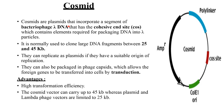Cosmids are plasmids that incorporate a segment of bacteriophage lambda DNA containing the cohesive end site, also called the cos site, which contains elements required for packaging DNA into the lambda particle. They are normally used to clone large DNA fragments between 25 to 45 kb. They can replicate as plasmids if they have a suitable origin of replication, and can also be packed into phage capsids, allowing foreign genes to be transferred into the host cell by transduction. An advantage is high transformation efficiency; cosmid vectors can carry up to 45 kb, whereas plasmids and lambda phage are limited to 25 kb.